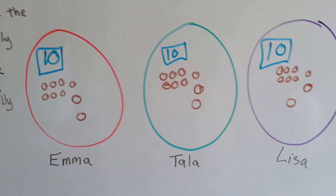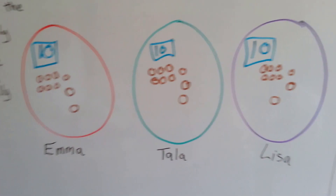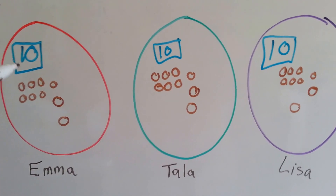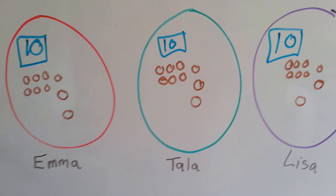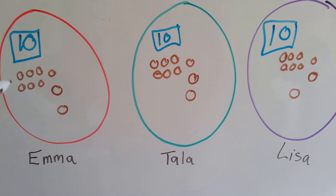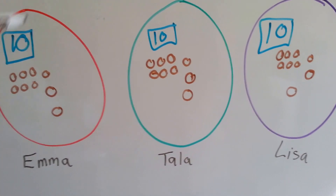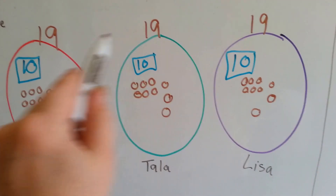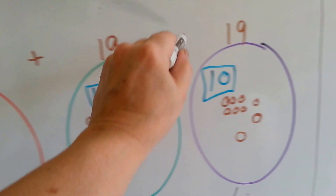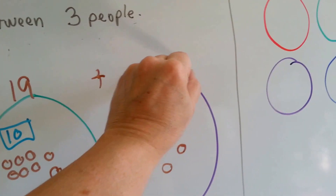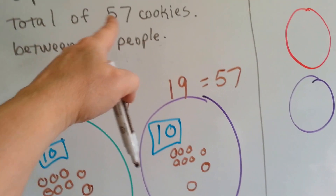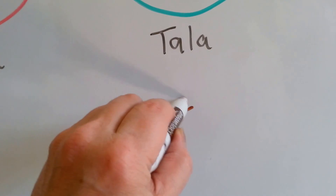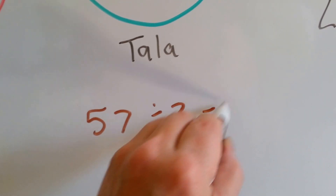So now, how many cookies does each girl have? We know they all have the same amount because we split them carefully. Whatever Emma has, that's what everyone has. She's got 10, 11, 12, 13, 14, 15, 16, 17, 18, 19 — she's got 19. They each get 19 cookies. 19 plus 19 plus 19 equals 57, so 57 divided by 3 equals 19.